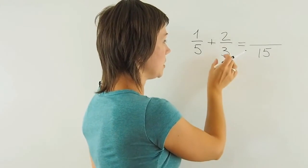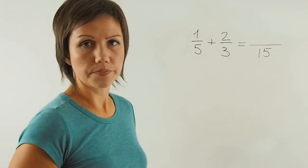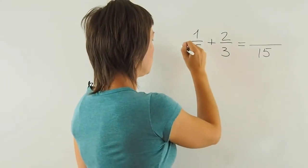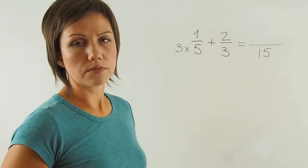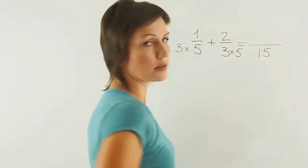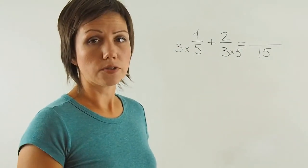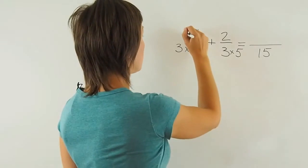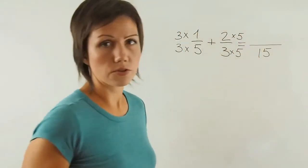15 should be now the denominator of this fraction and of this fraction. In order for me to turn this into 15, I need to multiply the denominator by 3 and this one by 5. But remember, what I do to the denominator, I do to the numerator. So, times 3 at the top, times 5 at the top.